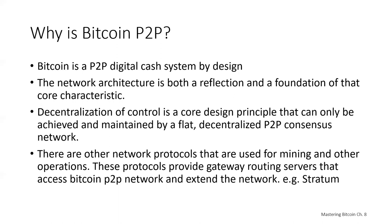The term Bitcoin network refers to the collection of nodes running the Bitcoin peer-to-peer protocol. In addition to the Bitcoin P2P protocol, there are other protocols such as Stratum that are used for mining in lightweight or mobile wallets. These additional protocols are provided by gateway routing servers that access the Bitcoin network using the Bitcoin P2P protocol and extend that network to nodes running other protocols. For example, Stratum servers connect Stratum mining nodes via the Stratum protocol to the main Bitcoin network and bridge the Stratum protocol to the Bitcoin P2P protocol.